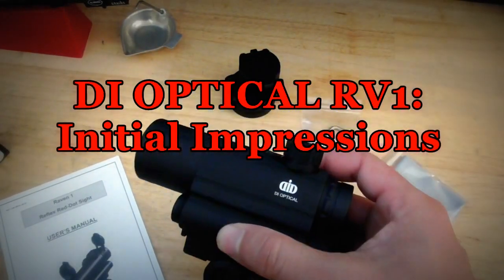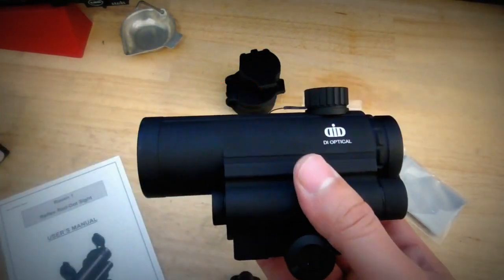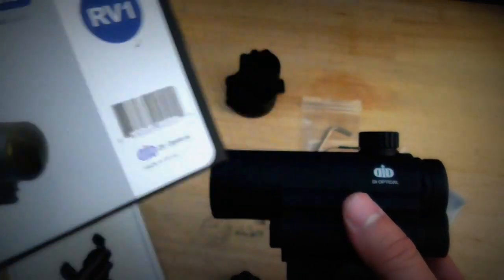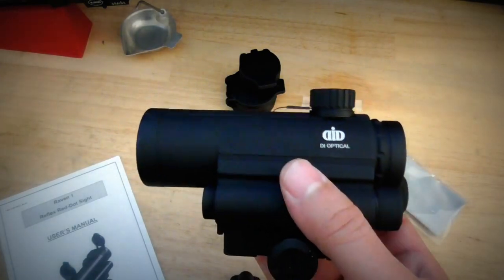Let's take a quick look at the DI Optical RV-1. This is an optic that comes from South Korea. This company's been on the market for about a year and a half to maybe two years.